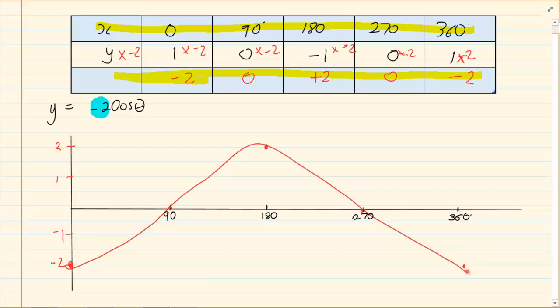Now remember we had said that the minus changes the graph around. So while you standardly know a cos graph goes like this, the minus turns it around. And that's how come the graph you see is looking upside down.